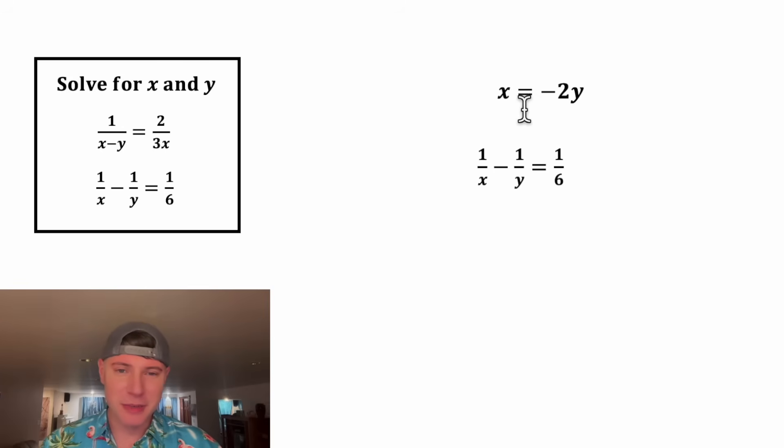This is really convenient because now we can just substitute negative 2y in for this x. Let's do that right now, negative 2y. Now we have one equation in terms of y, so we can solve for y. We could get rid of these fractions, but I'm going to show you the other method. Let's give them a common denominator.